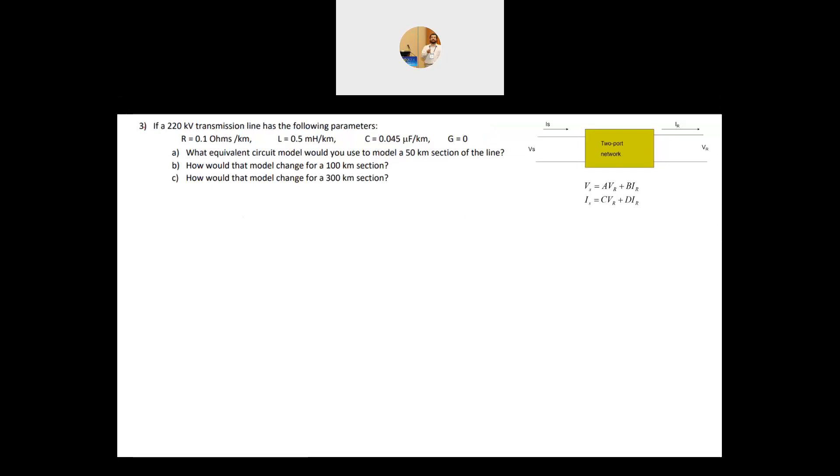The last question says here, for a 220 kV transmission line, has the following parameters, R is 0.1 ohm per kilometer, L 0.5 millihenry per kilometer, and C equal to 0.045 microfarad per kilometer. And we have seen how we calculate L and C by just knowing the configuration of the line. And G is equal to 0. G basically is the conductance of the transmission line. It represents the power loss. You have it between the line to the ground, and one of them is the corona on the surface. So when you have corona in the surface, this can be modeled as G, but G here is ignored.